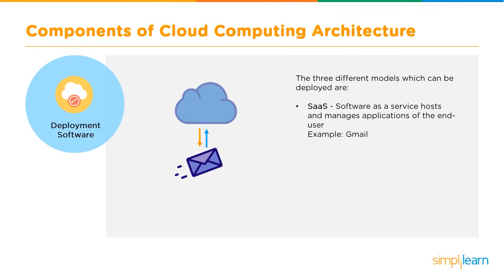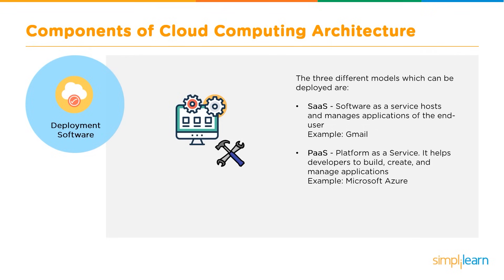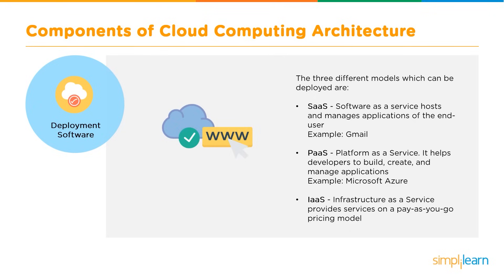Three deployment models are: Software as a Service (SaaS), which hosts and manages software for end users — Gmail is an example where users just create an email account and use the service; Platform as a Service (PaaS), which helps develop, build, and deploy applications and is primarily used by coders who can focus on development rather than infrastructure — Microsoft Azure is an example; and Infrastructure as a Service (IaaS), which provides services on a pay-as-you-go pricing model.